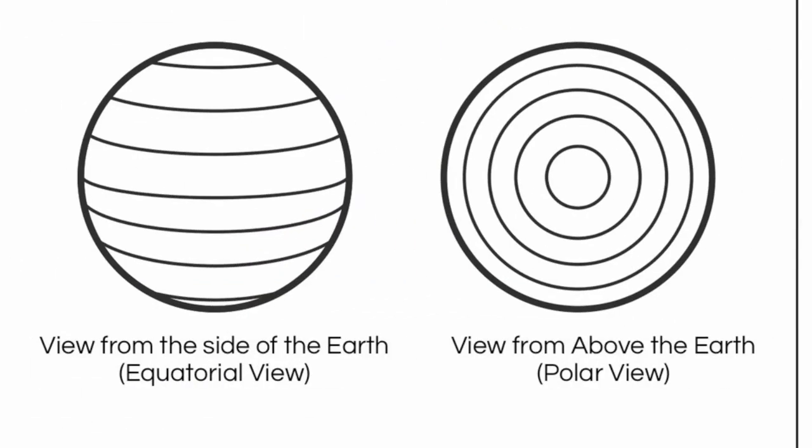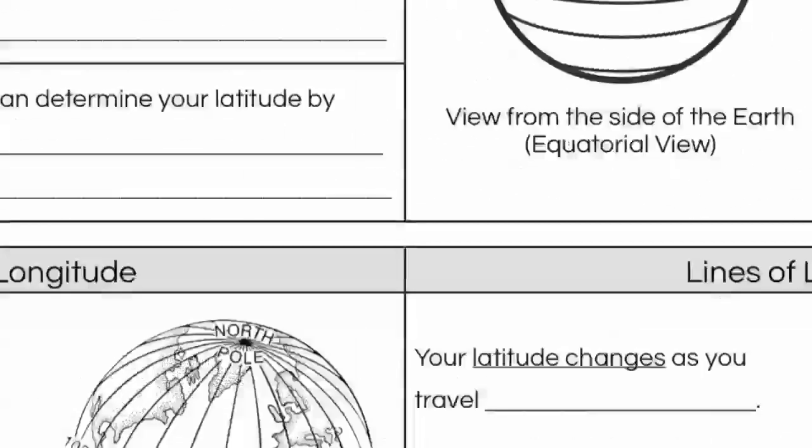Here we see what latitude lines look like. Notice these are horizontal lines. They're parallel to one another. They're often thought of as ladder-tude because they look like the steps of a ladder carrying you north to the north pole or south to the south pole. If you tilt the earth on its side and look from above, latitude lines look like concentric circles. It looks like a bullseye almost.